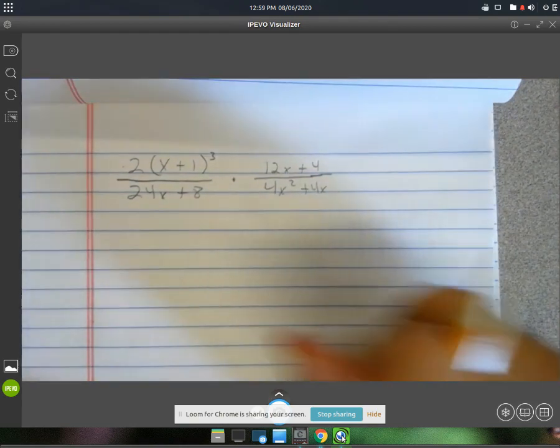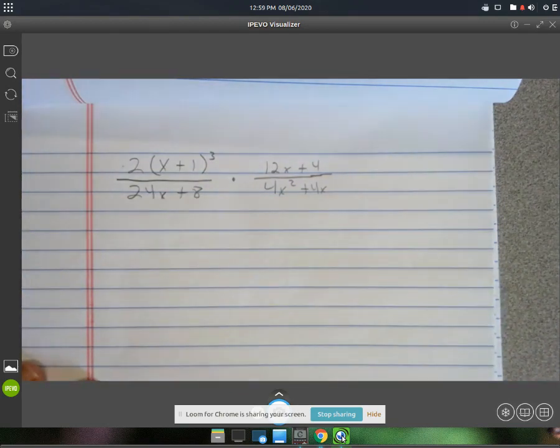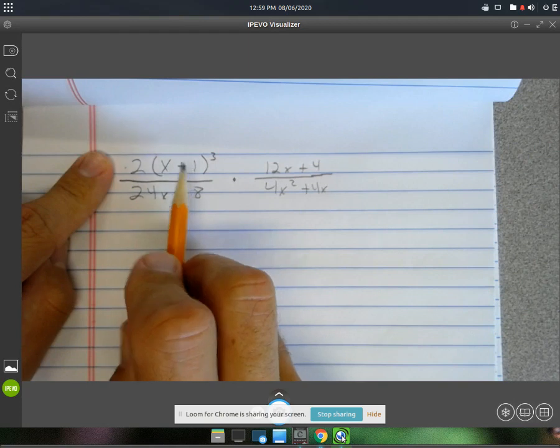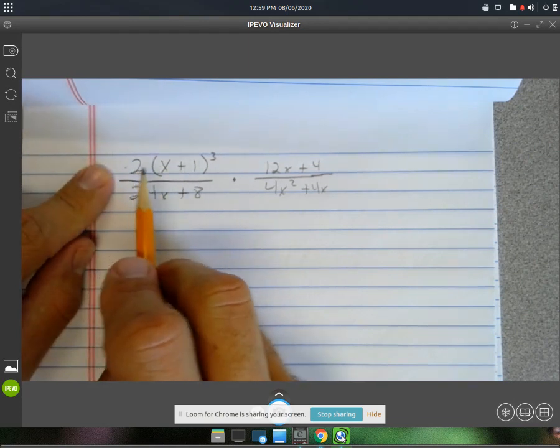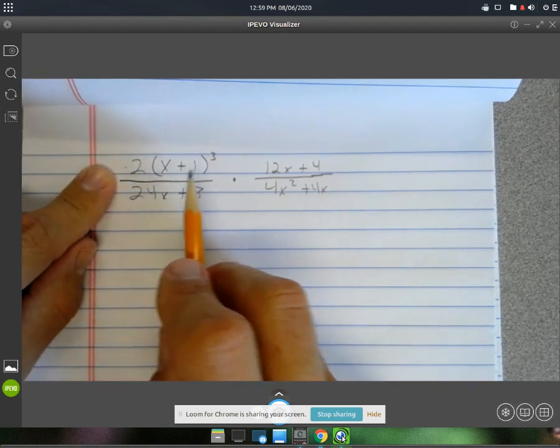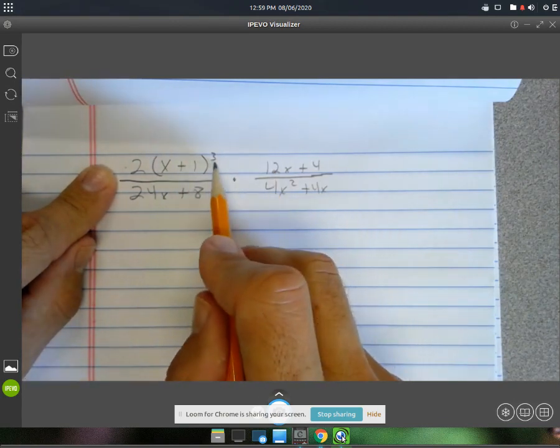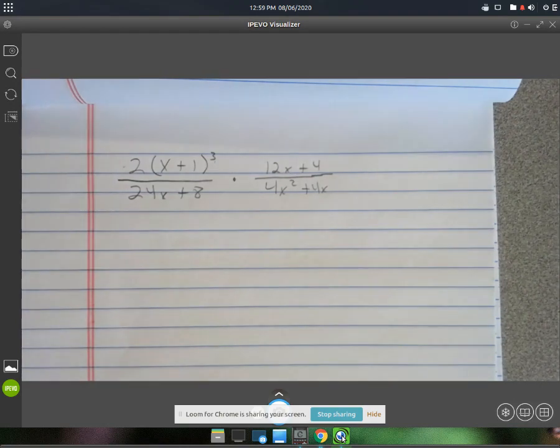and it's already in multiplication, so we don't have the same change flip. The numerator up here is actually already factored for us. Everything up here is multiplication. 2 times x plus 1 times another x plus 1 times another x plus 1. Remember, that's what that 3 for an exponent does for you.